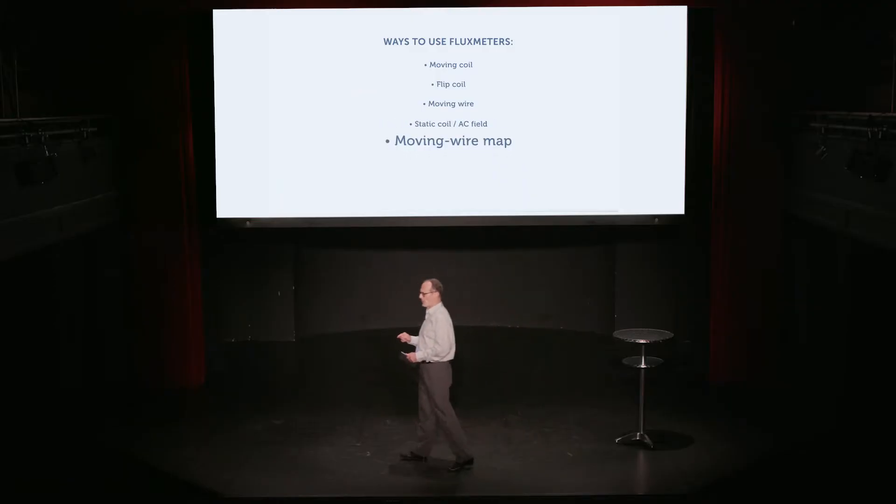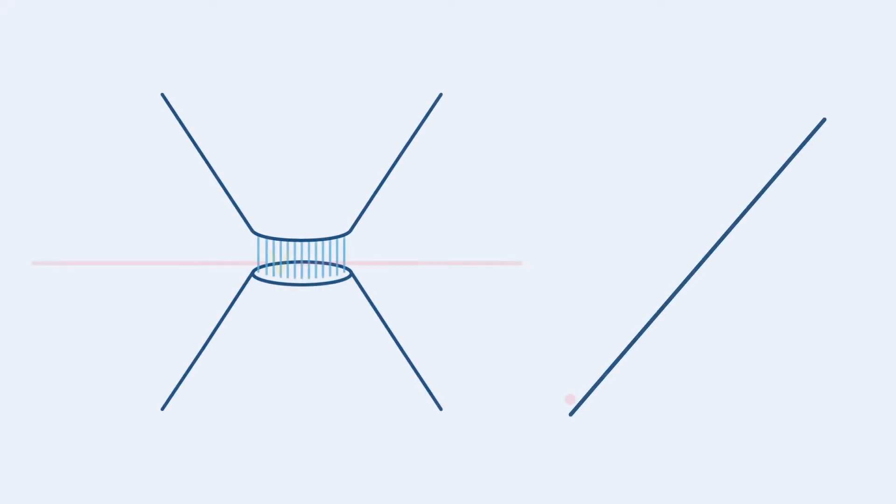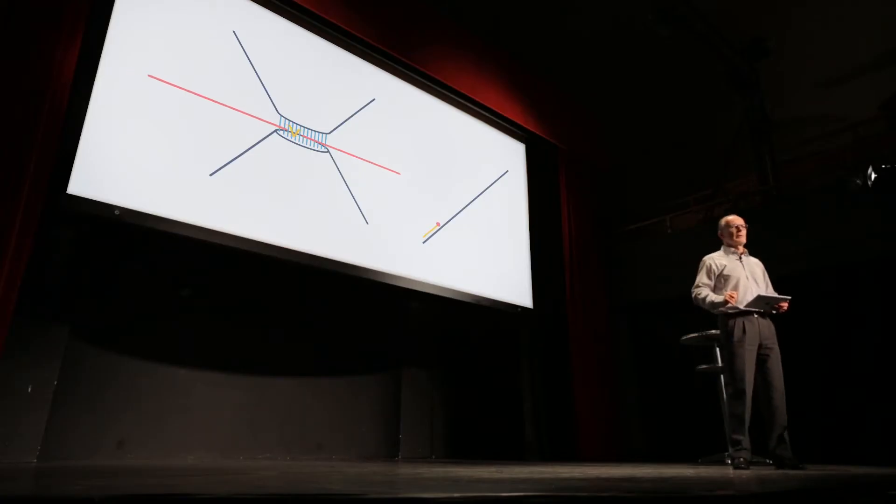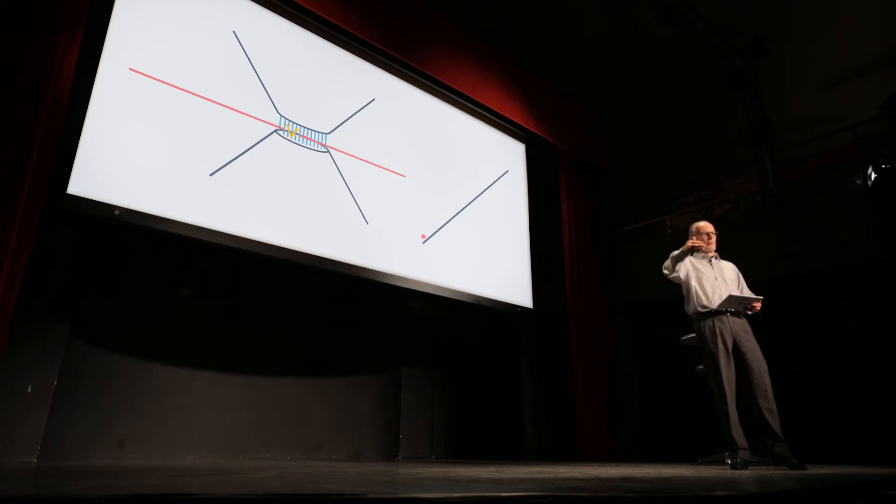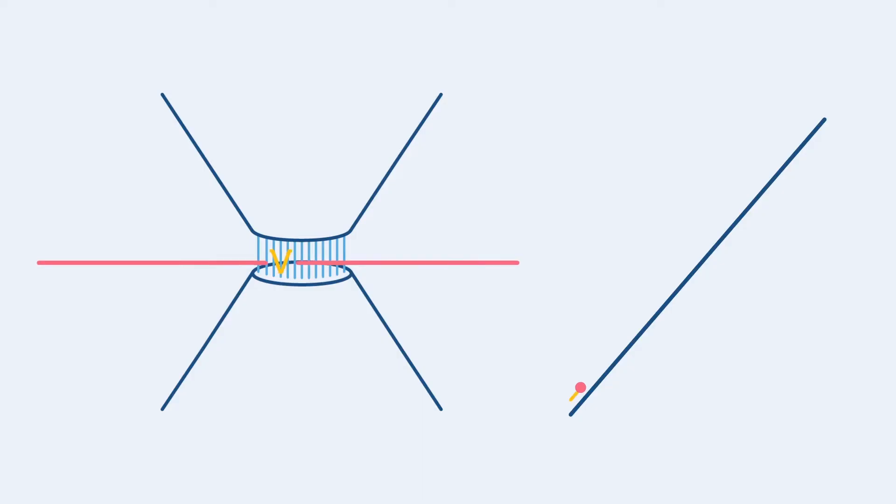One very important feature of flux meters is that you can get a field map practically for free. For example, what I've shown here is a moving wire. And as we move the wire, we are interested not just in the final result when we've gone all the way through the magnet. We're going to save the partial integrals as we move the wire through the magnet. And what we get then is a profile of the field as we move that wire through the gap.